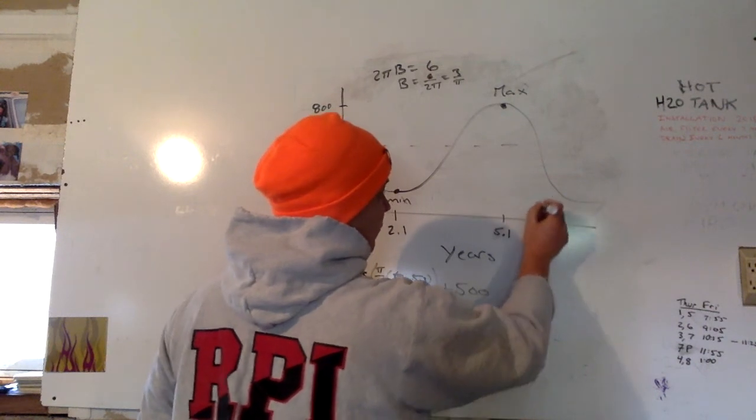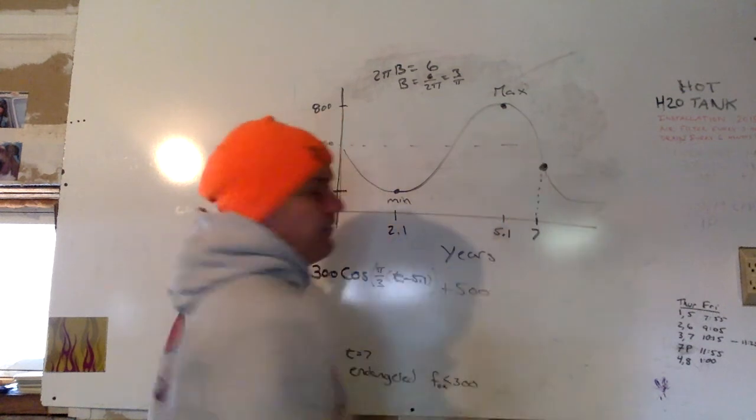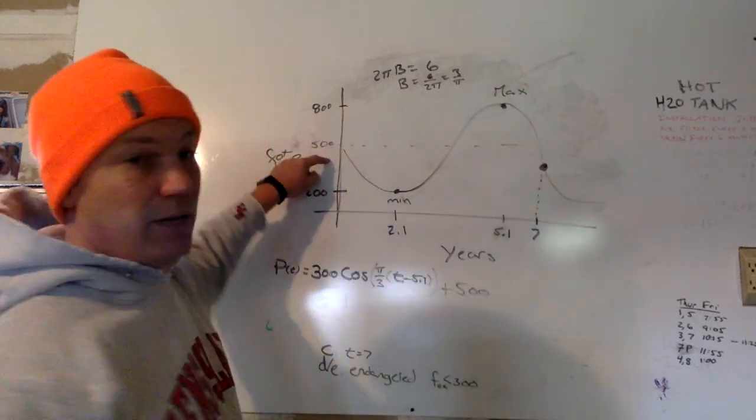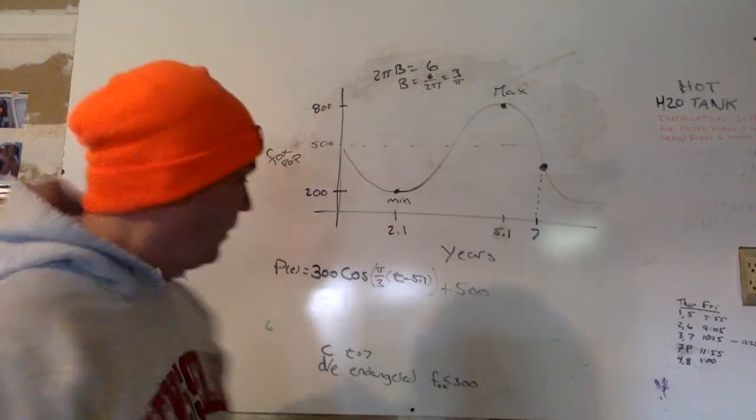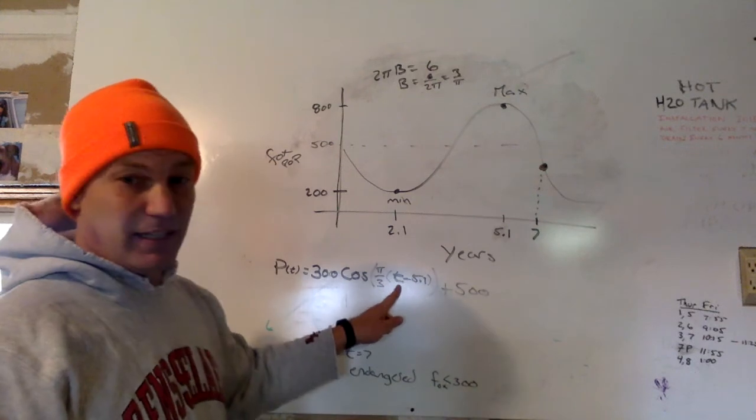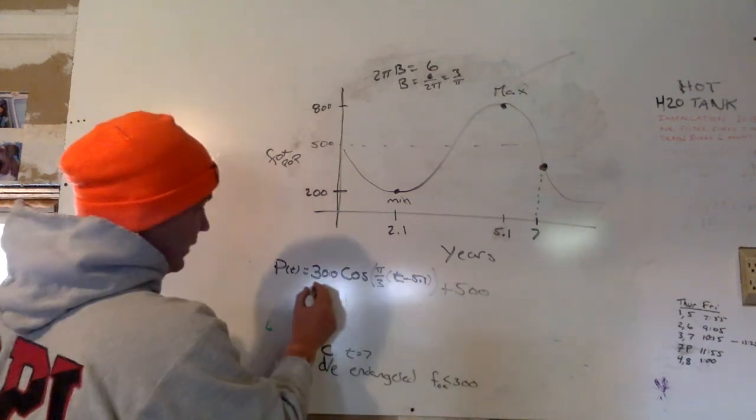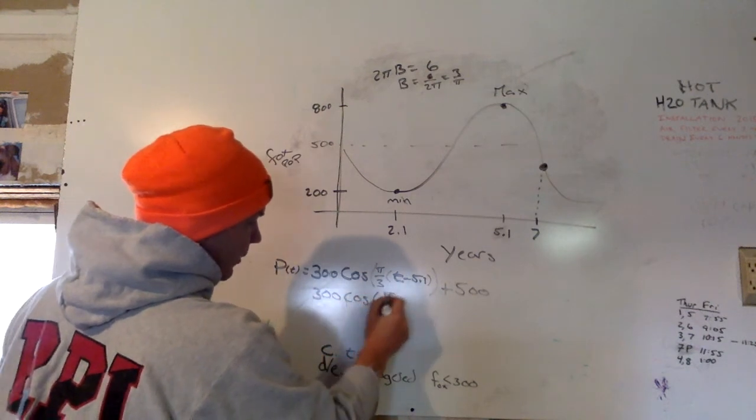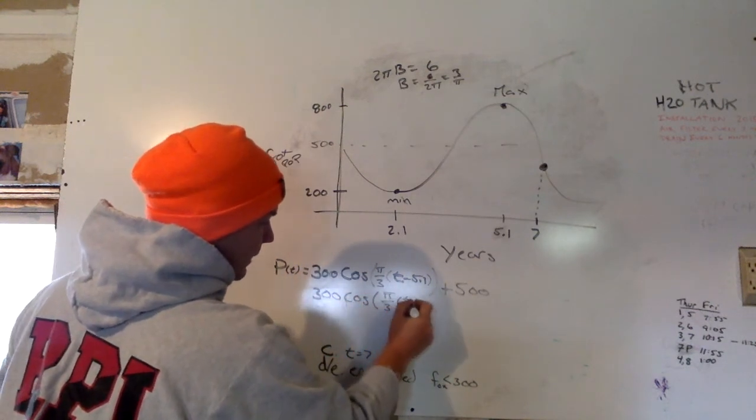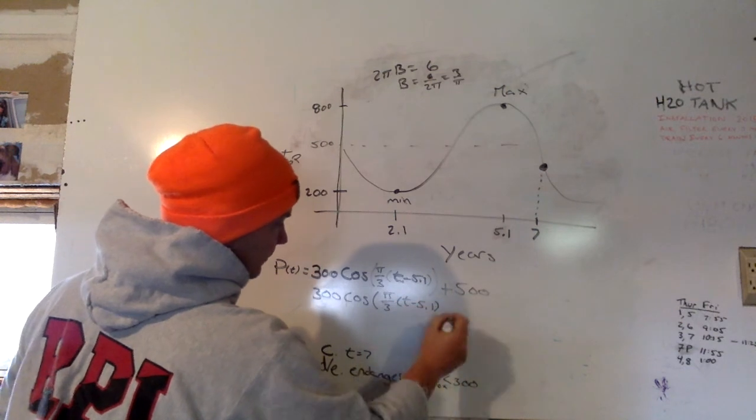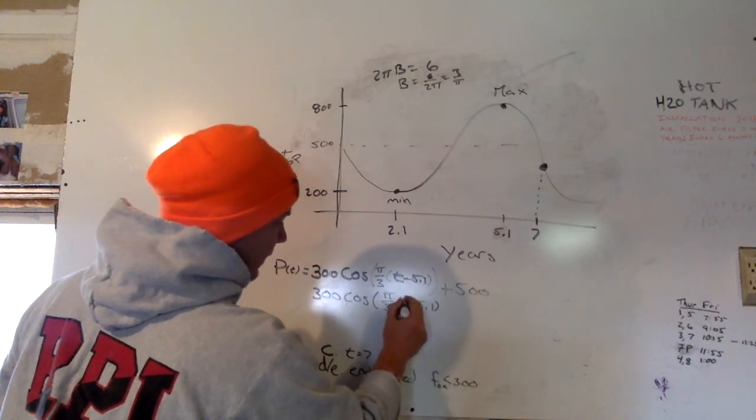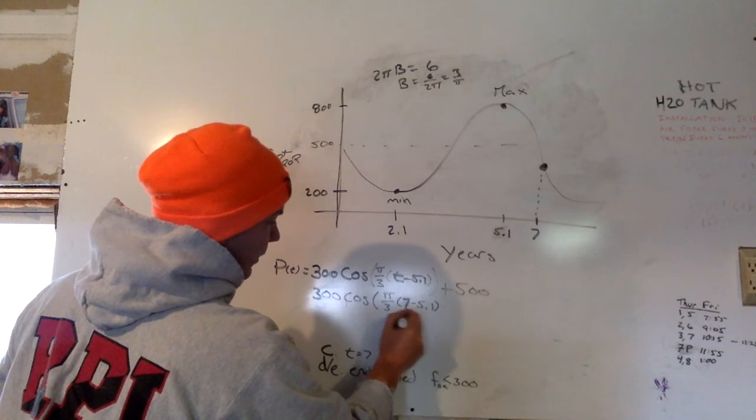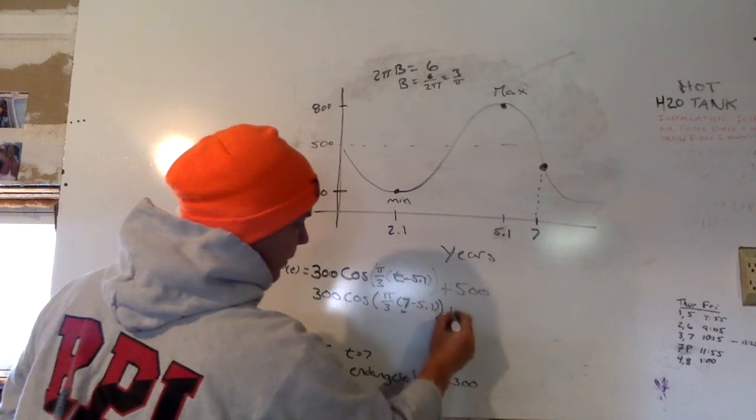And so if we drew a line up, we just need to find that value, right? We need to find the y value associated with that. It's as simple as just plugging in t equals 7 here. So I need to solve the equation 300 cosine of π over 3, times (t minus 5.1), whoops, not t, 7, right? Because that's what we're inputting, plus 500.